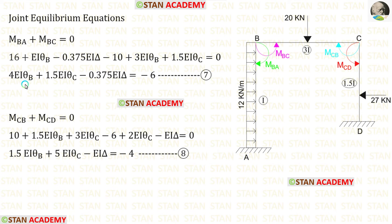In this analysis there are three unknowns: EI theta B, EI theta C, and EI delta. So we need one more equation. Let us see how to make that.